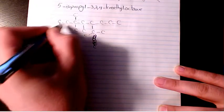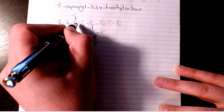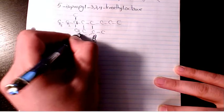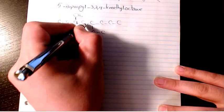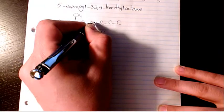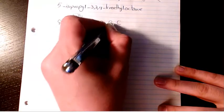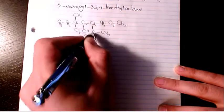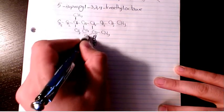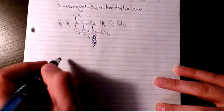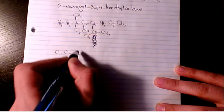So we have CH3-CH2, this carbon doesn't have any hydrogen here, CH3, CH3, CH-CH3, CH2-CH2-CH2-CH3. We have CH3 here, we have CH, and we have CH3.